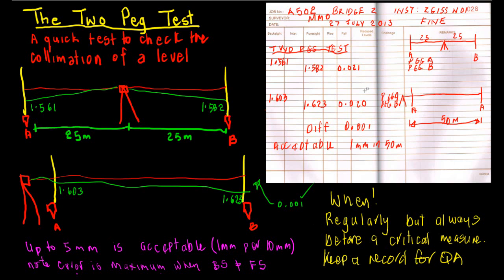Now, it pays to check these very carefully. My reading methodology that I use when I'm reading the leveling staff with the level is: first I would read staff A and I would get 1.561.